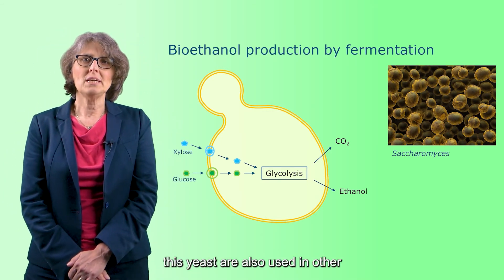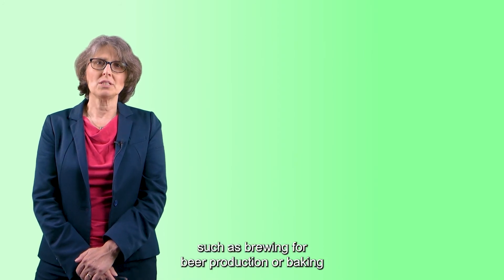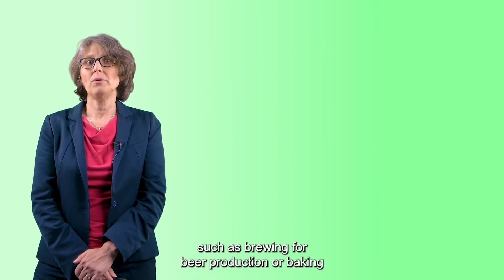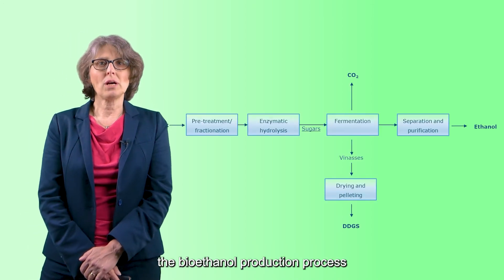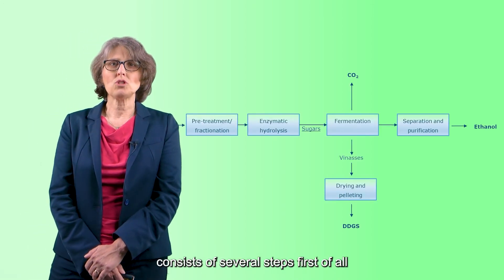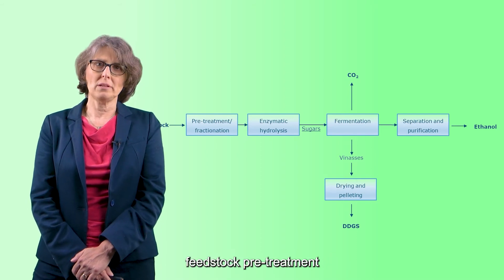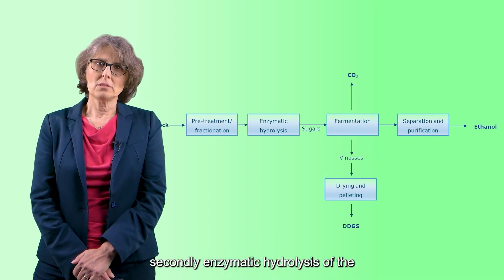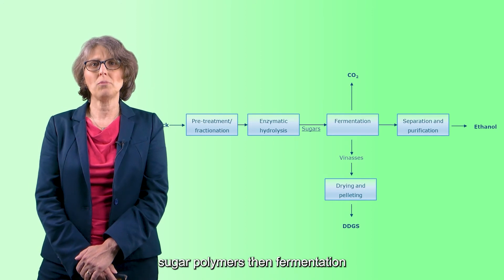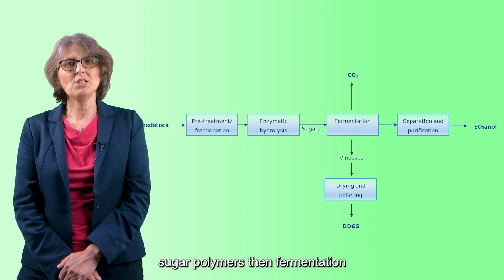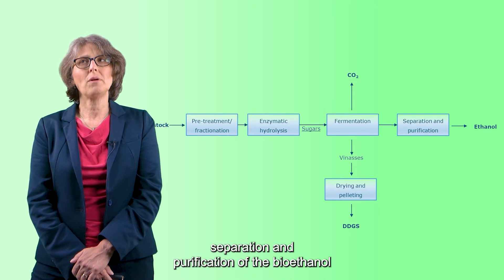These yeasts are also used in other fermentation processes, such as brewing for beer production or baking. The bioethanol production process consists of several steps: first, feedstock pretreatment; secondly, enzymatic hydrolysis of the sugar polymers; then fermentation, followed by separation and purification of the bioethanol.